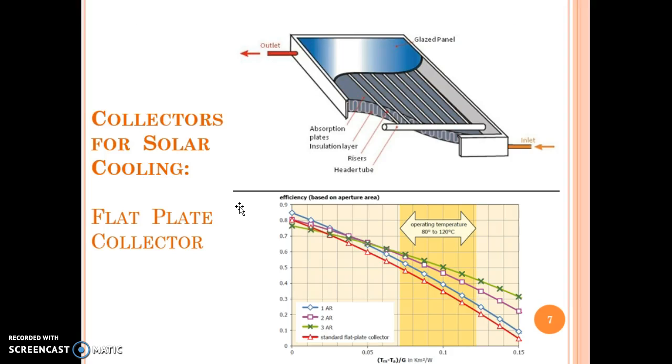The collectors for solar cooling: one of the collectors is explained here, which is a flat plate collector. These are the typical components of a flat plate collector. You have glazed panel or the glass cover at top. You have two headers—this is the header tube at the bottom from which the cold water enters, and you have outlet from here where the hot water comes out. You have the tubes connecting the two headers, and these tubes are in good thermal contact with the absorber plate.